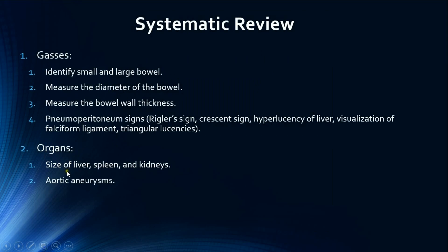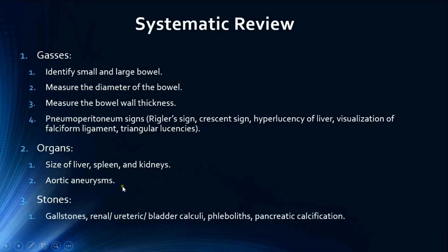The second part of the systematic review — 'O' for organs — includes assessing the size of the liver, spleen, and kidneys, and checking for aortic aneurysms. Note that best visualization of these organs is via ultrasound or CT. The third part — 'S' for stones — includes gallstones, renal, ureteric, and bladder calculi, phleboliths (venous calcifications), and pancreatic calcifications.